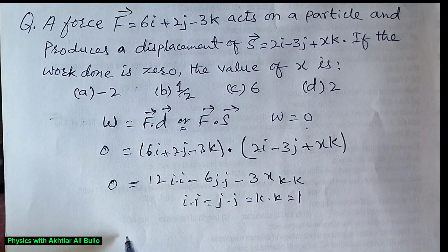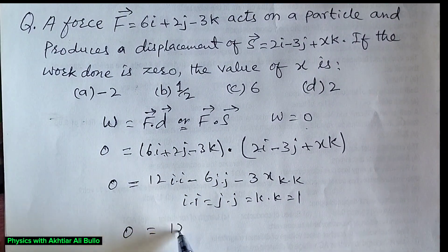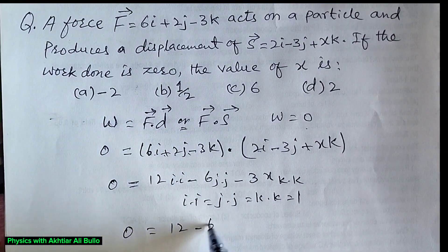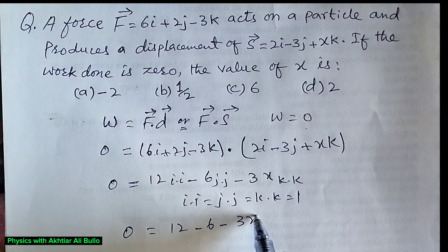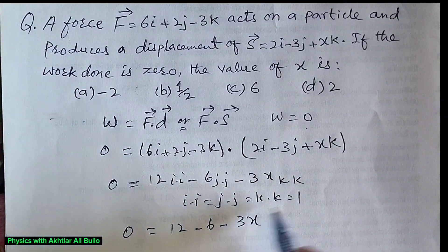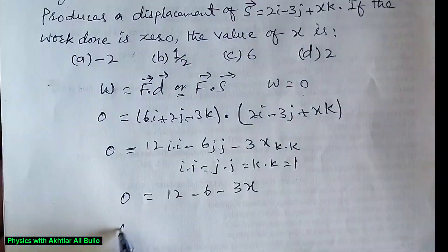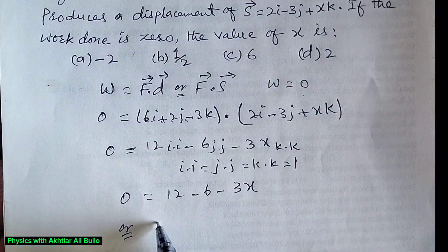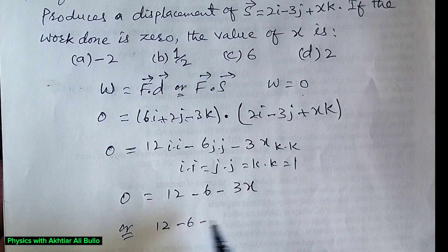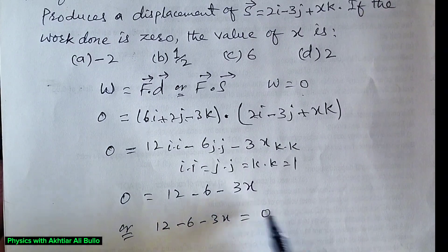So, 0 is equal to 12 minus 6 minus 3X, or we can also write it as 12 minus 6 minus 3X is equal to 0.